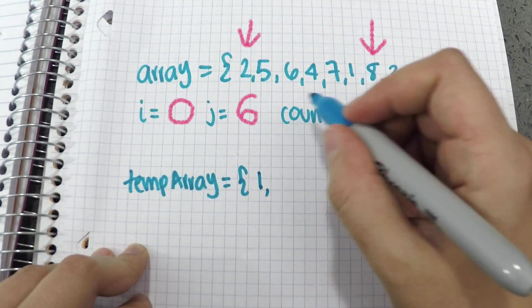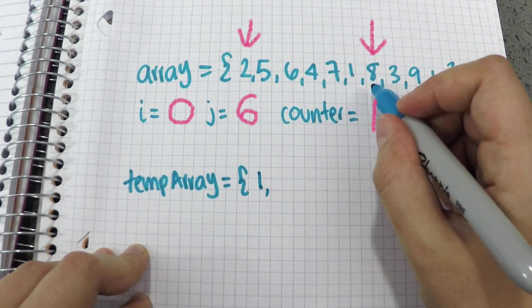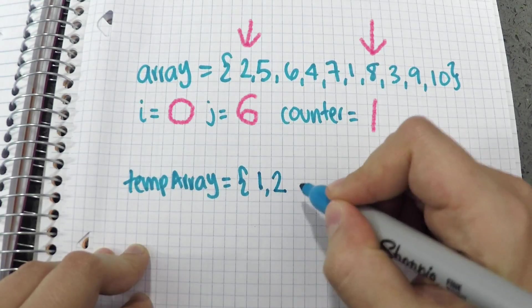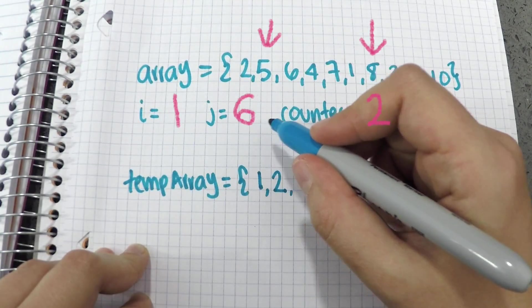In the next iteration, i is 0 and j is now at position 6 with element 8, and the counter is 1. 2 is smaller than 8, so I save 2 at 1 in the temporary array and increment i.